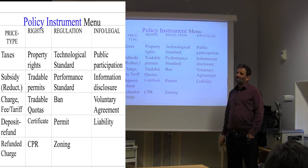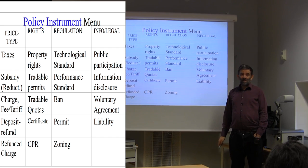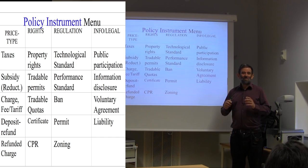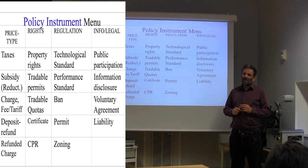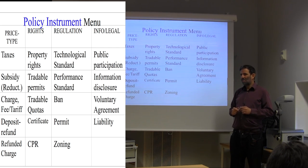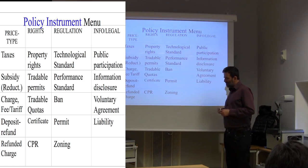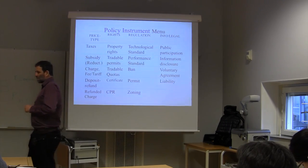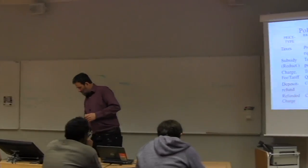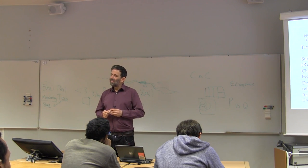The success of this instrument depends very much on the structure of the industry. If you have powerful oligopolies like they do in Japan — a small group of industries that run the whole of Japanese industry — they have a stronger incentive to organize themselves and do this than in more perfect competition. Liability, finally, is also an important instrument.